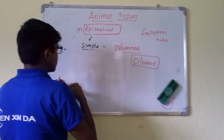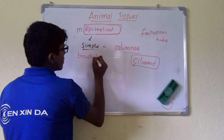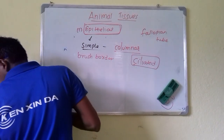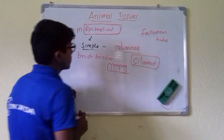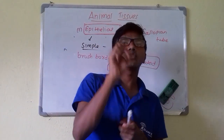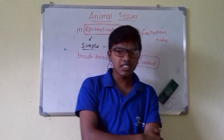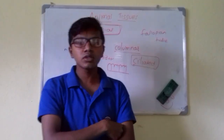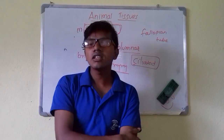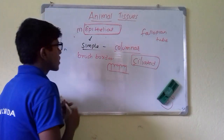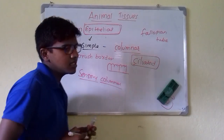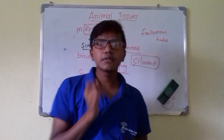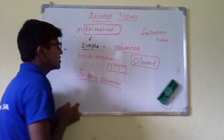Brush border columnar epithelium has brush-like borders and is mainly present in the intestinal mucosa, where absorption of food occurs. It is also present in the stomach for secretion of gastric juice. The third type is sensory columnar epithelium, which is present in sensory areas such as taste buds.